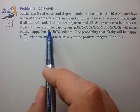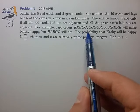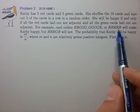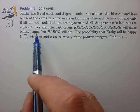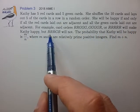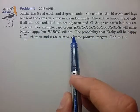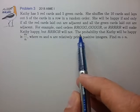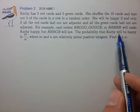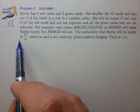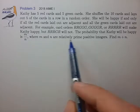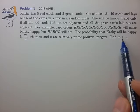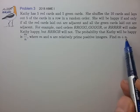For example, the 3 configurations shown will make Kathy happy, but this last configuration will not. The probability that Kathy will be happy can be written as a reduced fraction m over n. Find the sum m plus n.